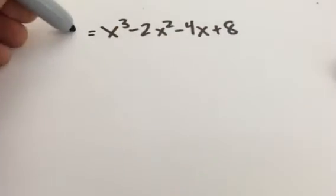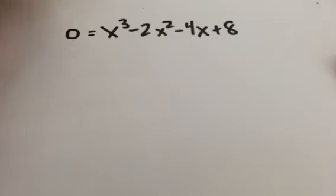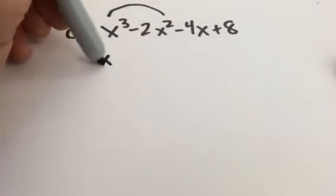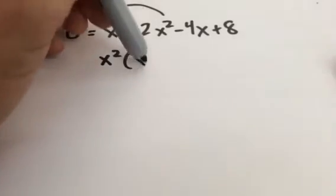I'm finding zeros of this. So, zero. Same sort of thinking. Notice in these first two terms, there's an x squared. I can factor out an x squared. I'm going to factor that out. It leaves me an x minus 2.